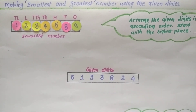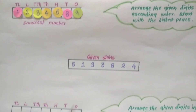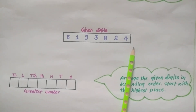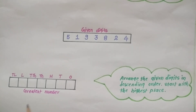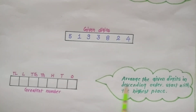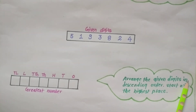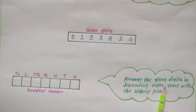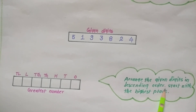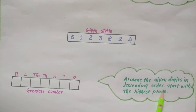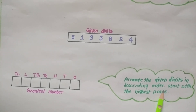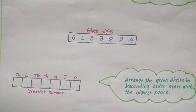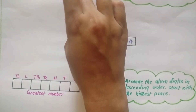Similarly we can form the greatest number using the given digits. To form the greatest number, first we arrange the given digits in descending order. Descending order means greatest to smallest. So I start placing the greatest digit at the highest place.